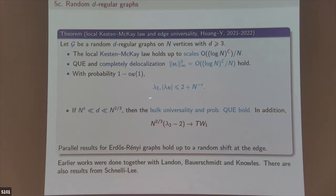Once d is bigger than n^ε, we get all the bulk universality and Tracy-Widom for the second eigenvalue after correct scaling. This holds for the random d-regular graph. The parallel result also holds for Erdős-Rényi. Much of this was done with collaborators — some results are still on preprint and should appear in a few weeks.